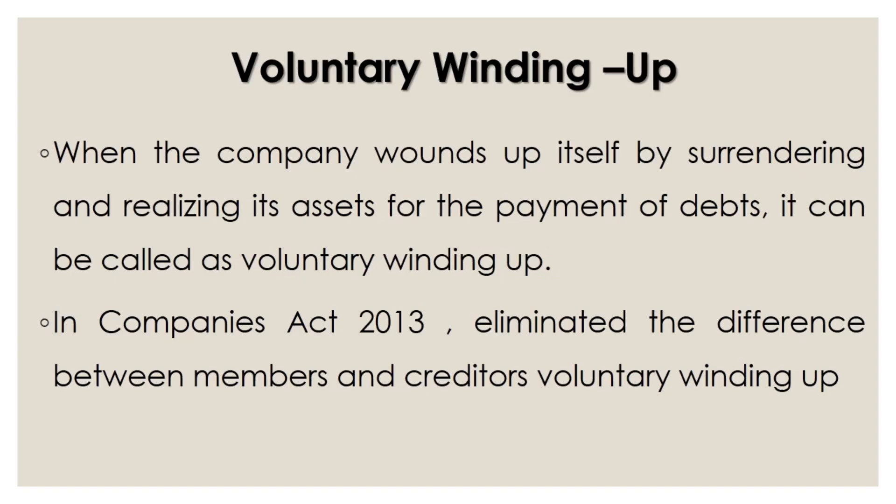Voluntary winding up means winding up of a company by the members without interfering any tribunal or court. When the company is ready to surrender and realize its shares for the payment of their liabilities, it can be called as voluntary winding up. The Companies Act 1956 classified voluntary winding up into two: creditors' voluntary winding up and members' voluntary winding up. But in the Companies Act 2013, they eliminated the difference between members' and creditors' voluntary winding up. Now there is only creditors' voluntary winding up with the consent of all the members in the company.